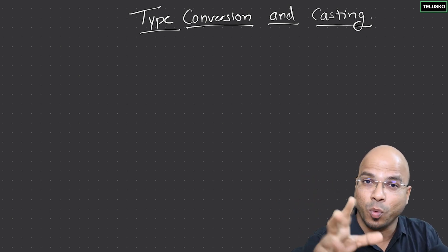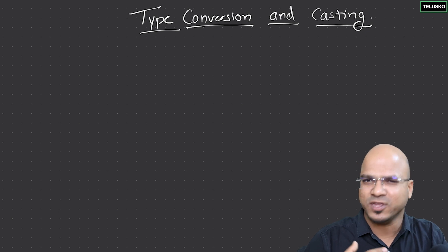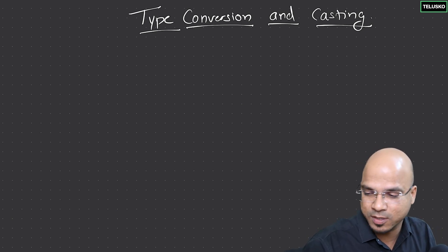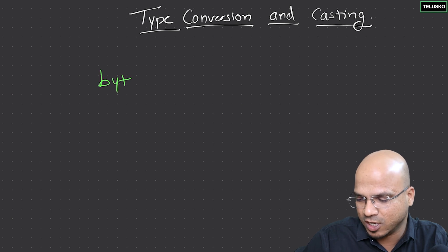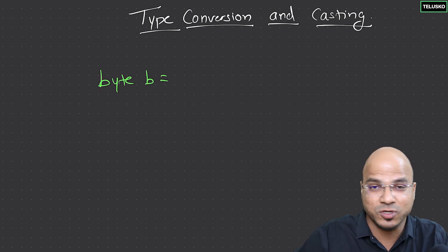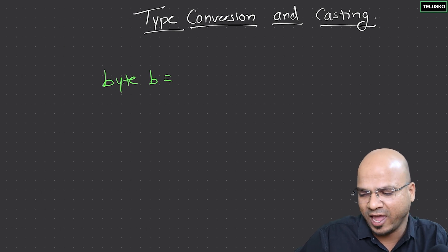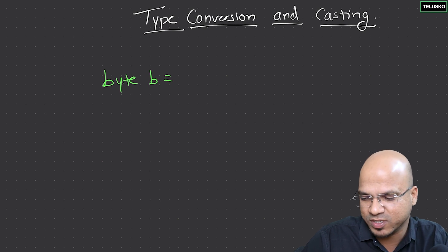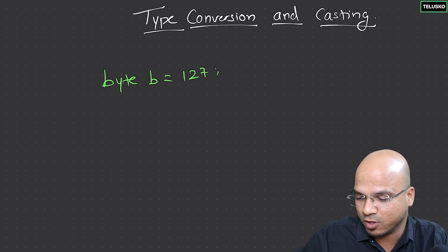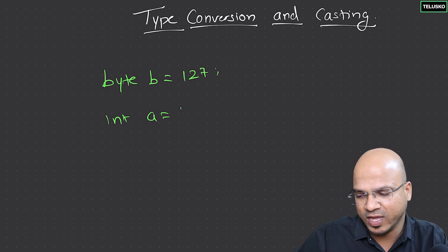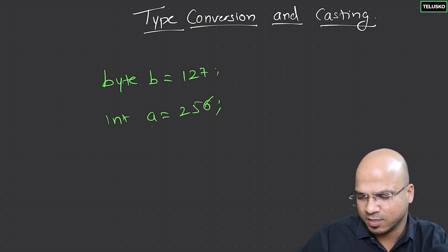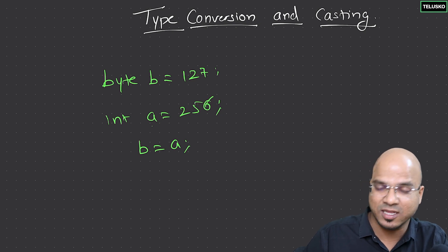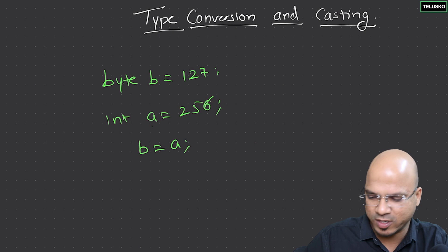Now there's one common question: can you change the type of a variable? Unfortunately we can't. But can you assign a value of one type to a variable of another type? For example, if we have a byte variable b, its maximum value is 127. What if we have an int variable a with value 256 and try to assign a to b? This will not work.